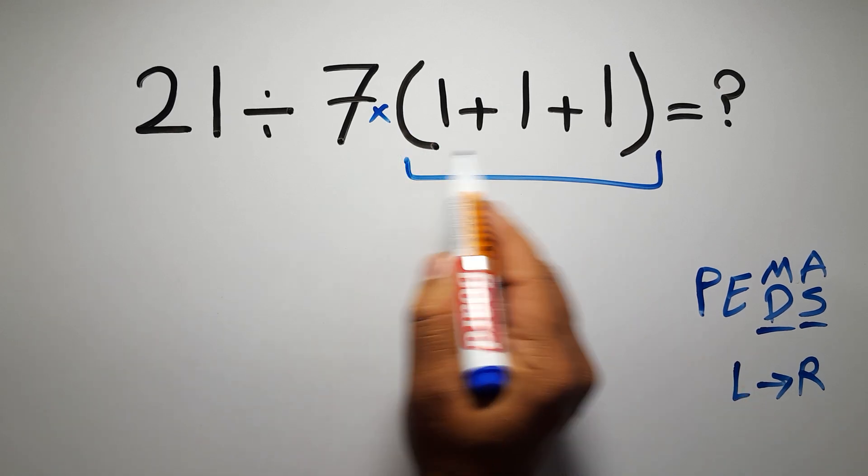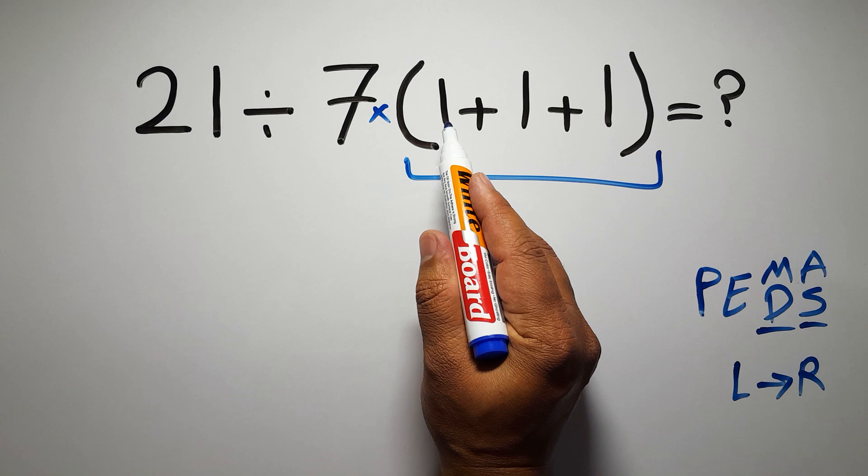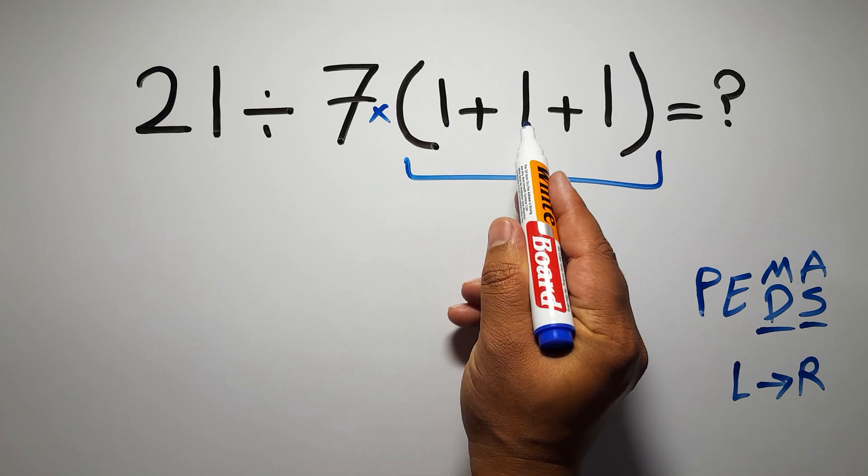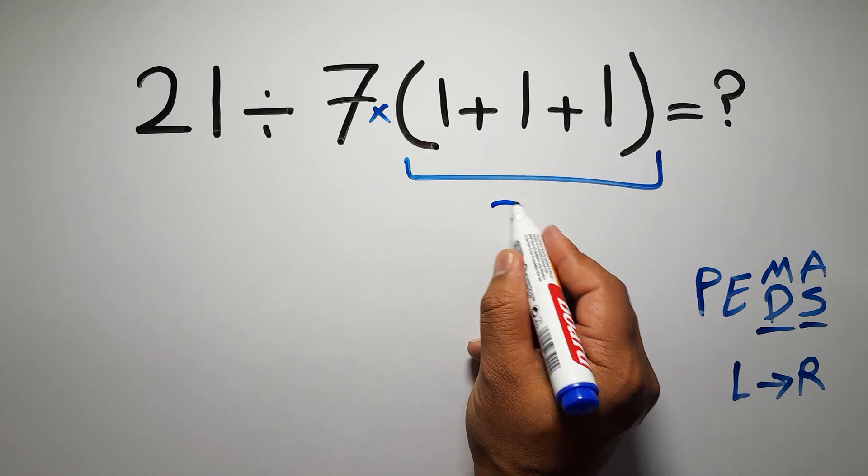So, first these parentheses. Inside these parentheses, we have 1 plus 1 plus 1, which equals 3.